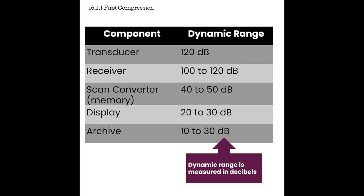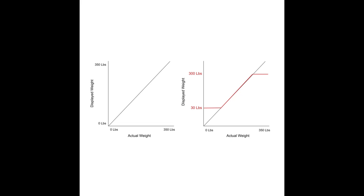Dynamic range is measured in decibels — it's a comparative number. Let's look at some examples from current ultrasound physics textbooks. Dr. Sidney Edelman has a green Understanding Physics book, fourth edition, and in his chapter on dynamic range he uses the bathroom scale as an example for compression. In this example, people have weight and their weight can really be anything — 0, 5, 10, 200, 250, 350 pounds. That is their real-life weight.